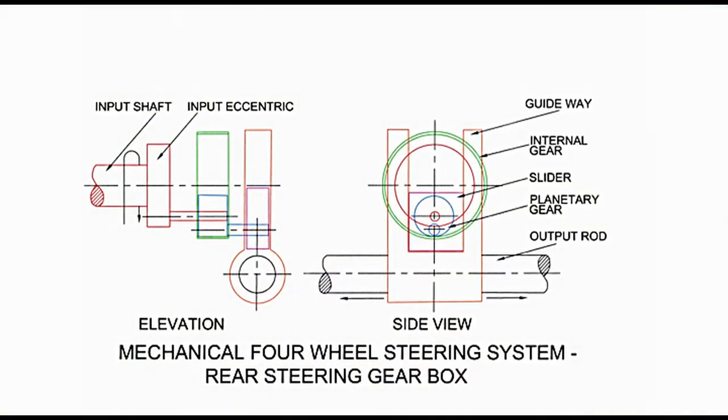Front wheels turn in the same manner as we have seen in previous systems. Rear wheels turn on the inner as well as on the outer side. Therefore, the rear steering gearbox has a different construction. To understand it, let us refer to the diagram that presents two views: elevation and side view.